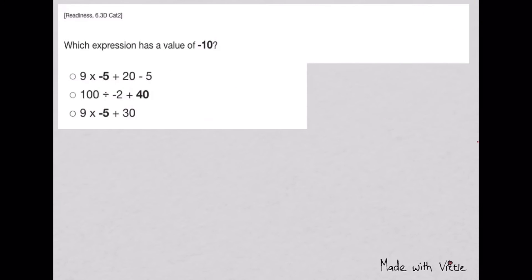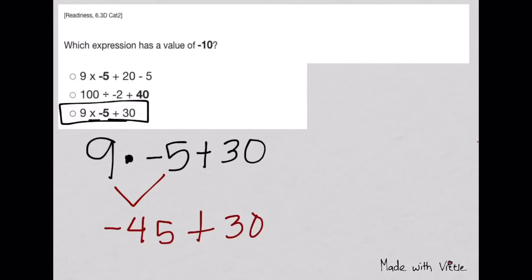Which expression has a value of negative 10? Usually, it's the shortest one that I advise my students to work on first, so they don't waste time on a longer expression. According to PEMDAS, it's multiplication first before you add or subtract. That means multiplication of two integers - one is positive, one is negative. Nine times negative five. Then apply addition of integers again. They're different signs, so subtract. This is not the answer because we're looking for negative 10.